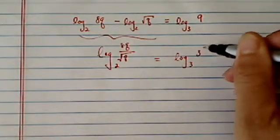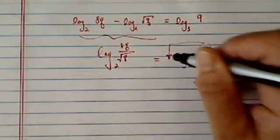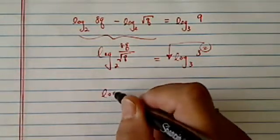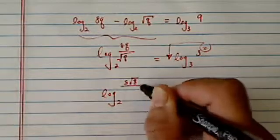log base 3, 3 squared, this hat can literally go in the front. So now we have log base 2 of 8 radical q over q.